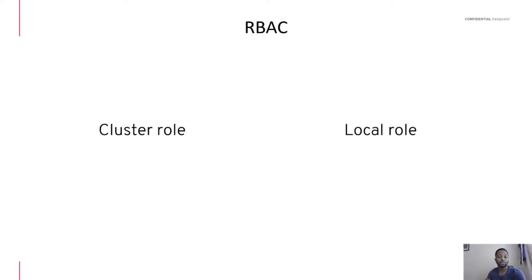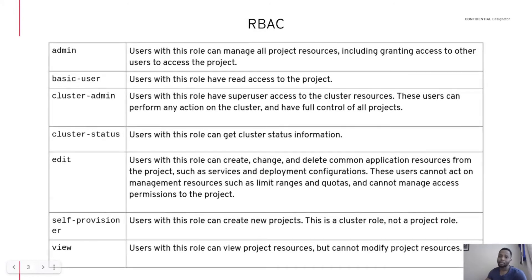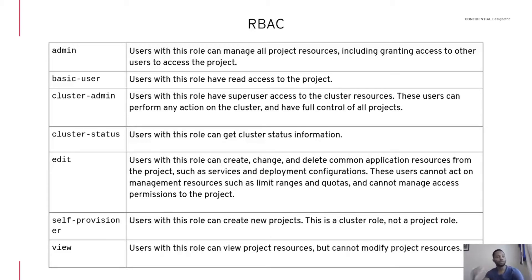OpenShift comes with a set of default cluster roles that can be assigned locally or to the entire cluster, and you can modify these roles for fine-grained access control. Some of the roles you'd see include the admin role — with this role the user has access to project resources such as quota limit ranges, and has the ability to create an application and manage all project resources.